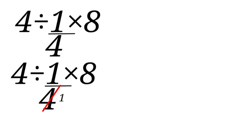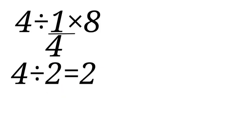8 divided by 4 is 2. So we now have 4 divided by 2. So 4 divided by 2 is 2. But this is wrong because we did not follow the order of operation before solving.